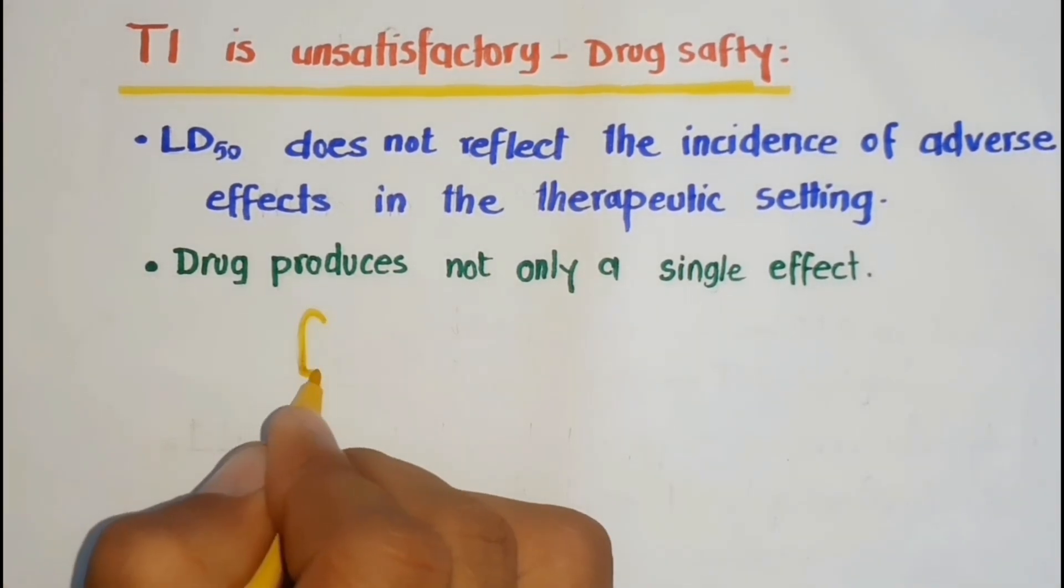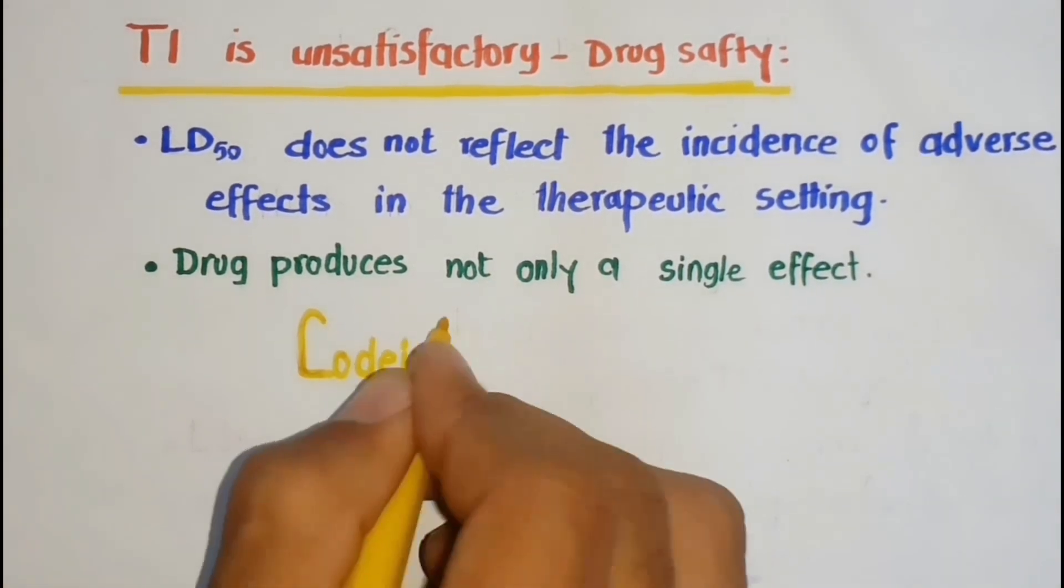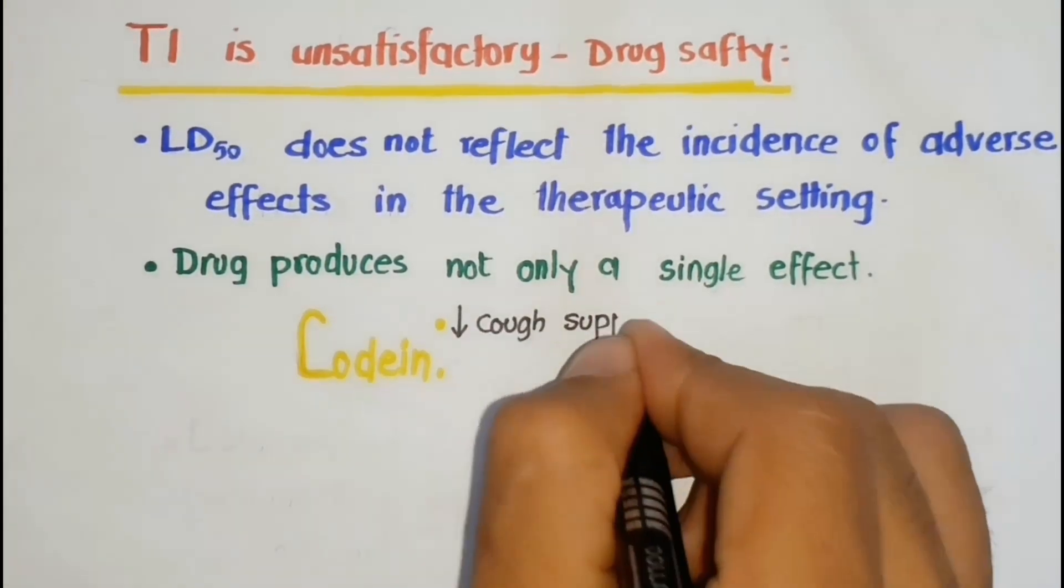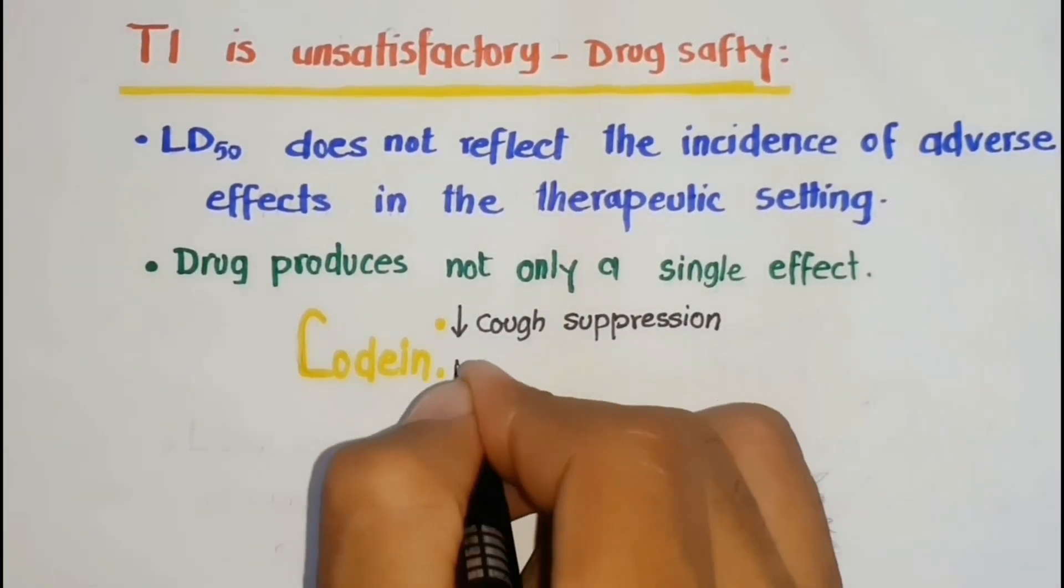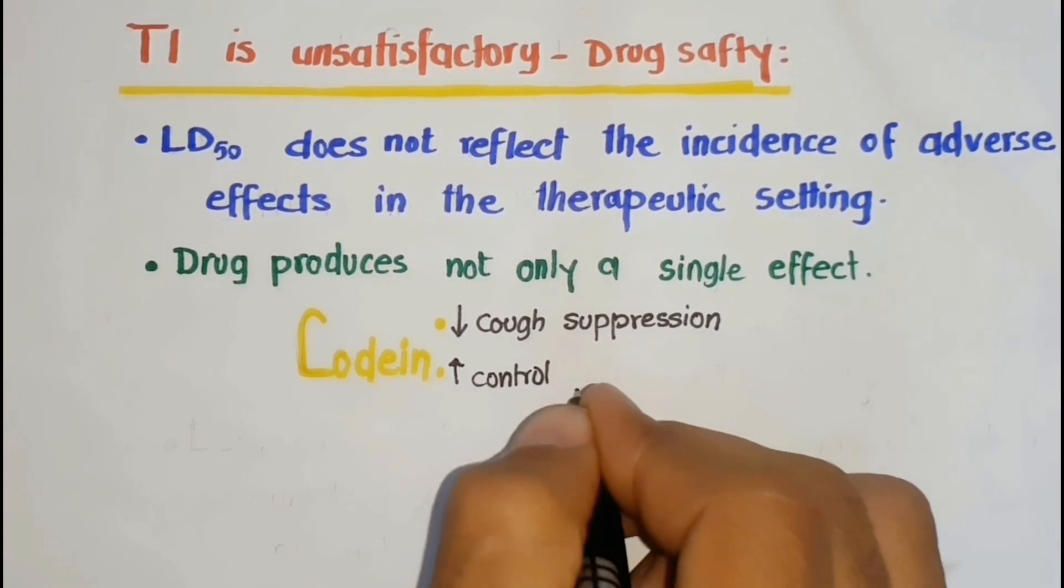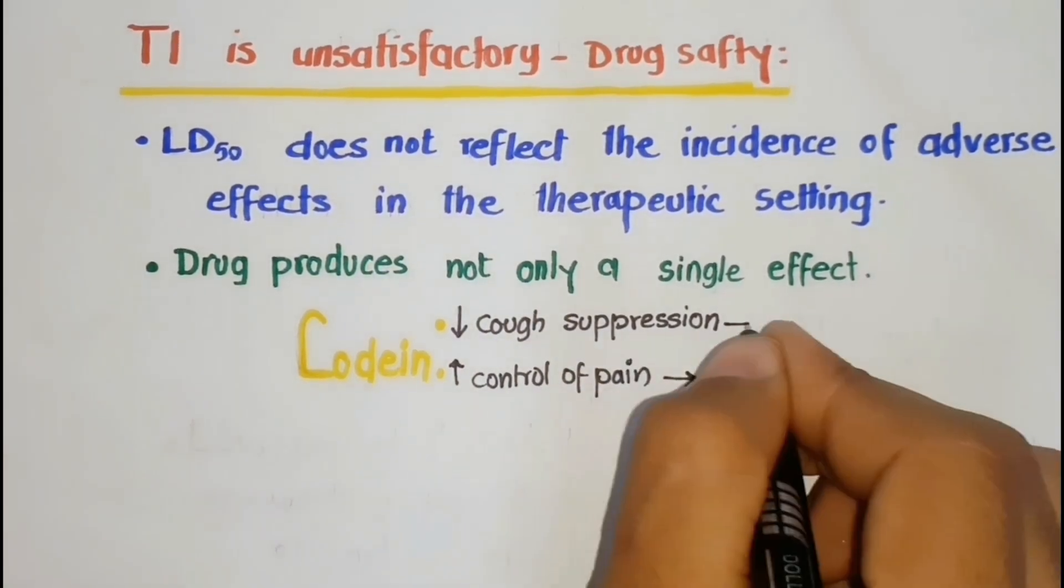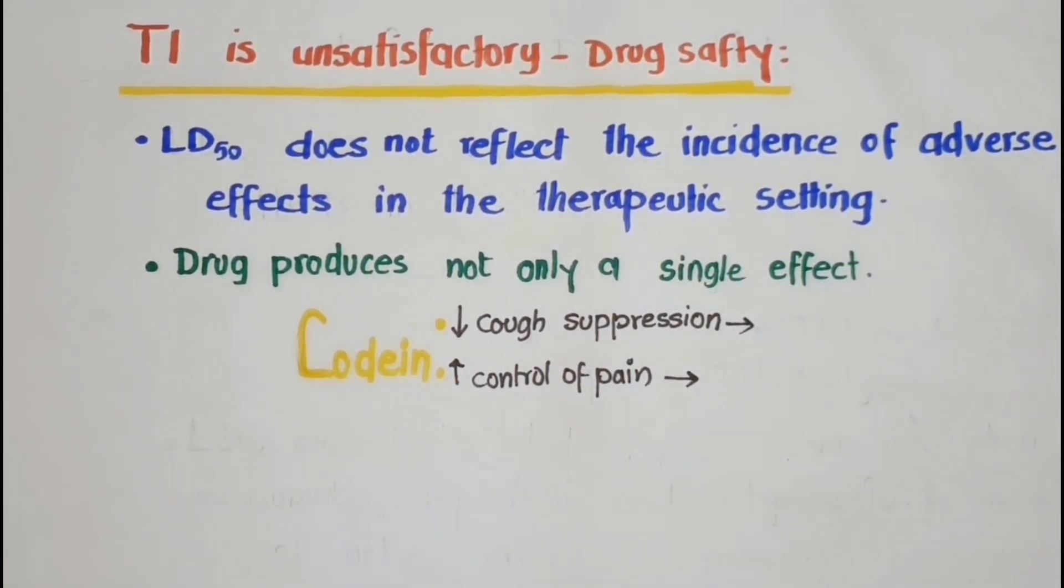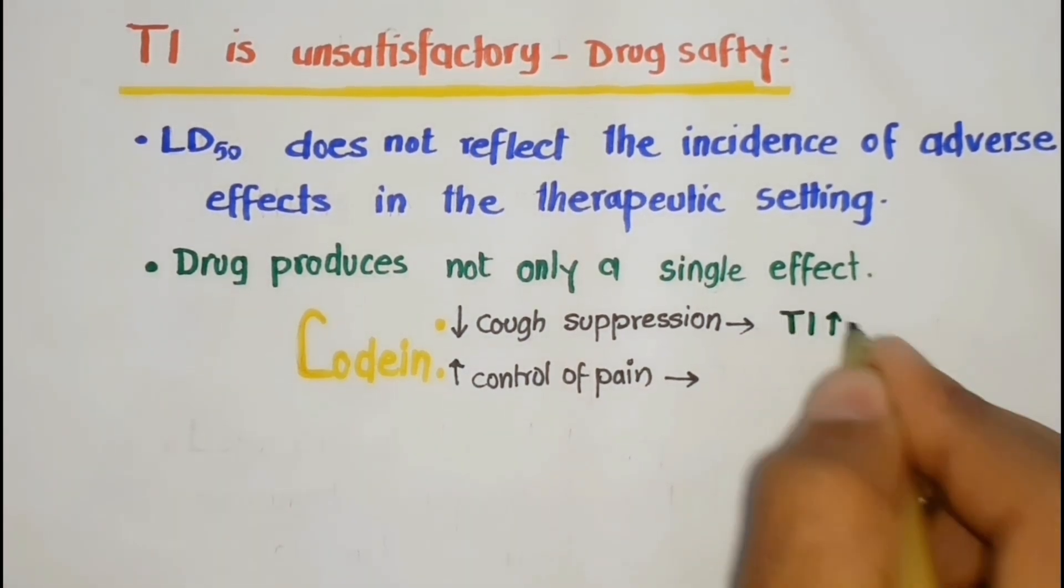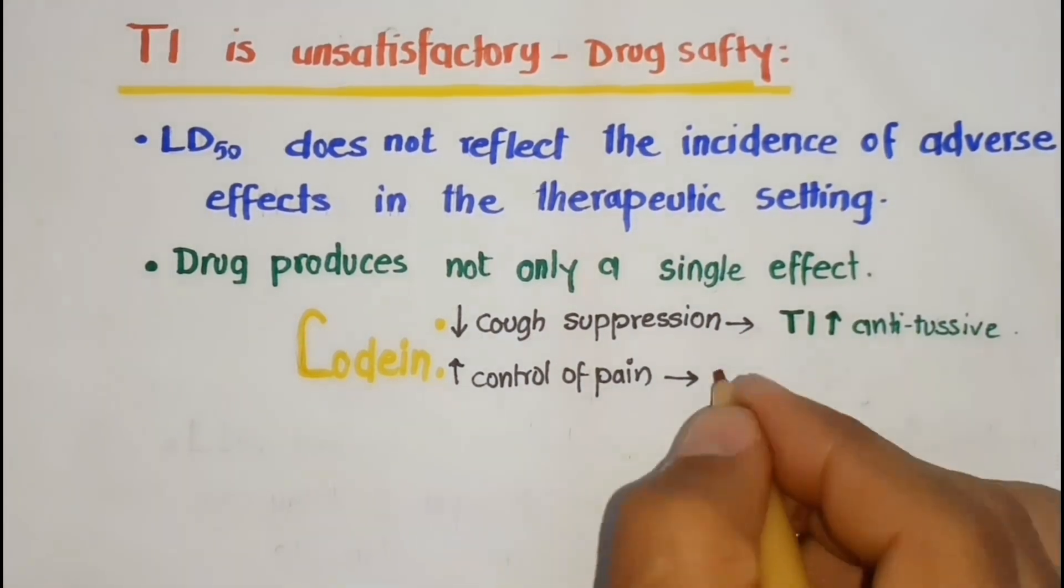For example, much less codeine is required for cough suppression than for control of pain in 50% of the population. And thus, the margin of safety, selectivity, or therapeutic index of codeine are much greater as an antitussive than as an analgesic.